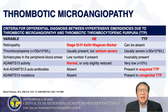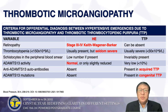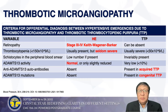Fundoscopic examination defines hypertensive emergency using the Keith-Wagener-Barker stage 3 and 4 classification. In thrombocytopenia, values less than 150 are usually present but seldom severe in hypertensive emergency, whereas in TTP it's usually severe — less than 30. Schistocytes on peripheral blood smear are invariably present in TTP. ADAMTS-13 activity is normal in hypertensive emergency and very low in TTP, with autoantibodies present in acquired TTP and mutations in congenital TTP.